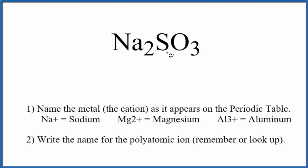To write the name for Na2SO3, the first thing we need to recognize is this SO3 here. This is a polyatomic ion, it's called the sulfite ion, sulfite.